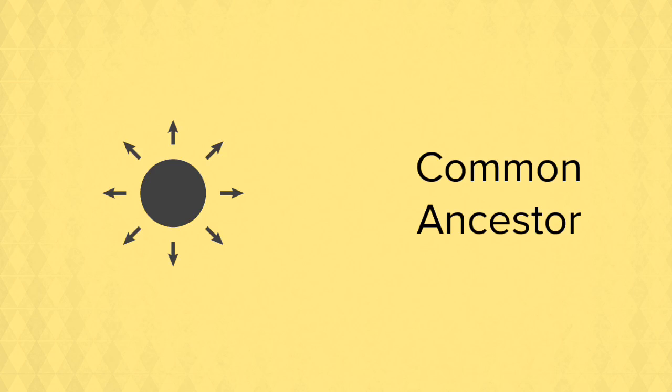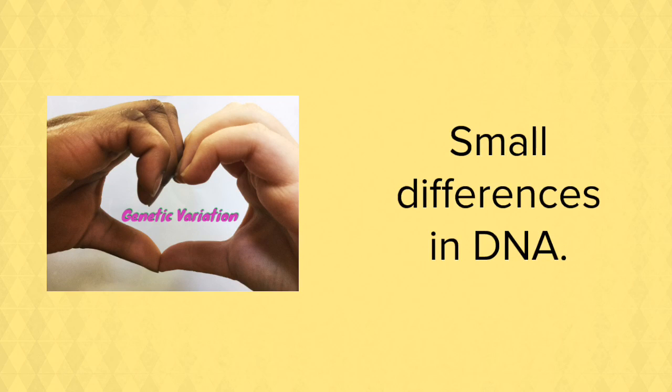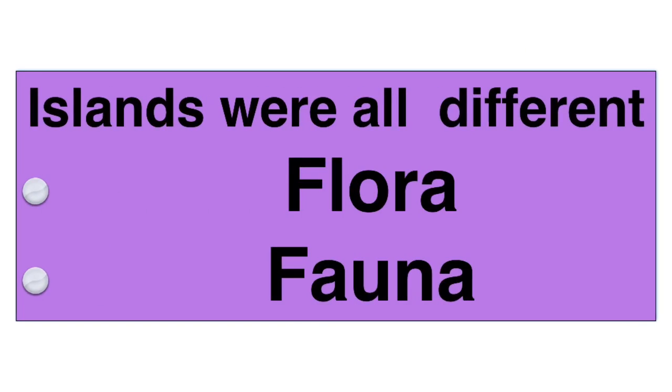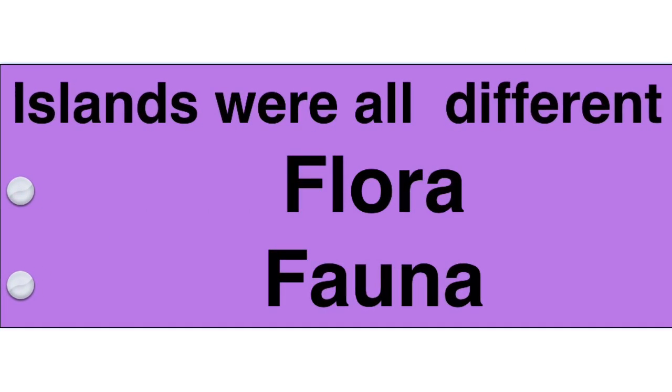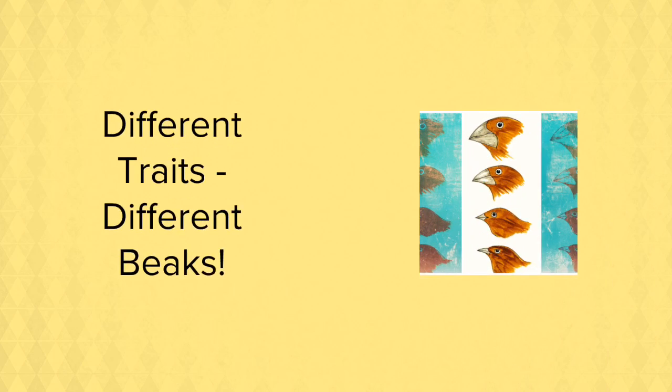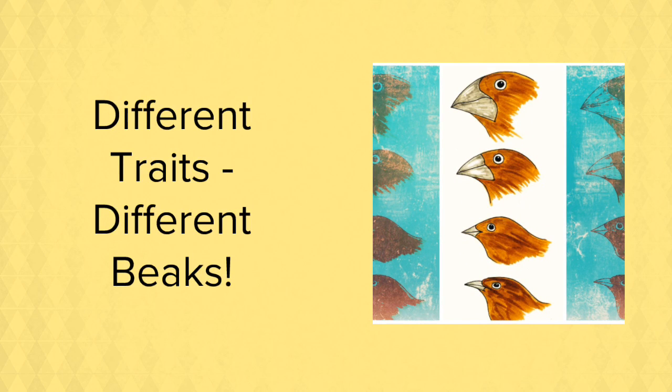Noting how similar the finches were, Darwin concluded that they must have come from the mainland, from a common ancestor. So this original group of finches coming from the mainland were all the one species, however they did have those genetic variations. This original group of finches would have landed on different islands where the flora and fauna were completely different. If genetic variation gave rise to the beak that was best suited to the food source on that island, well then that particular group of finches would have survived, thrived and passed on that trait.